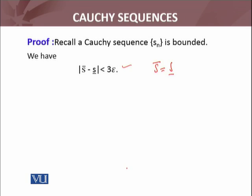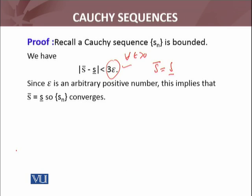If limit superior and limit inferior are equal, because this inequality is true for all epsilon. For all epsilon greater than zero. Since epsilon is an arbitrary positive number, which I have already explained, for all epsilon this inequality is true. Hence, the limit superior and limit inferior are equal. So, the sequence is convergent.